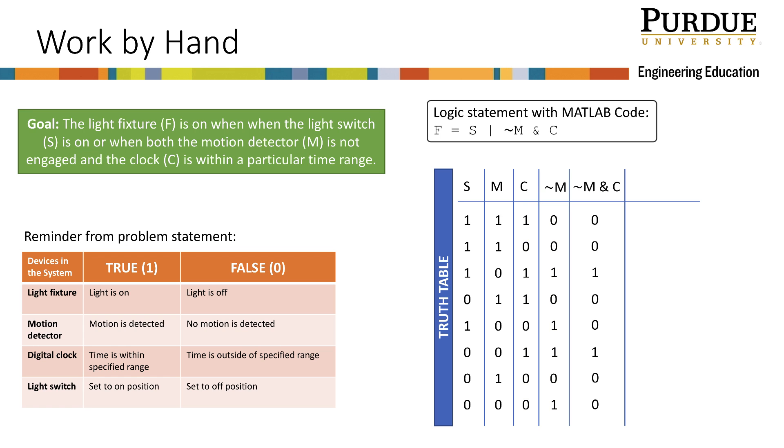Going back to our logic statement, the last operator to evaluate is the logical OR. So we make our final column, S or NOT M and C. Now we will look at the S column and the NOT M and C column to evaluate the OR. Remember that OR is true when one or both are true. It is only false when both are false. This will be easier to see. I see that there are three instances where both are false. So I add zeros to each of these instances and fill in the remainder of the columns with one. This final column represents the values of the light fixture F. Notice that the light fixture is on during five of the eight possible combinations.